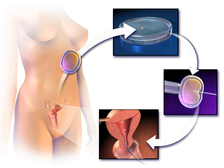Sex selection is the attempt to control the sex of offspring to achieve a desired sex. It can be accomplished in several ways, both pre- and post-implantation of an embryo, as well as at birth. Pre-implantation techniques include PGD, but also sperm sorting.